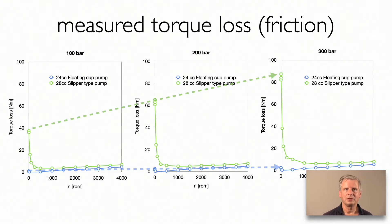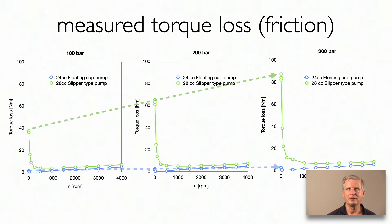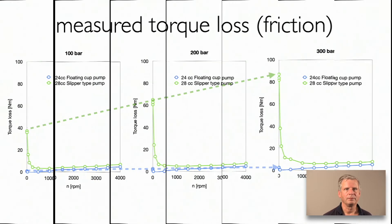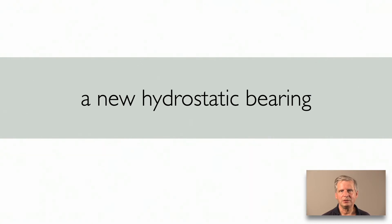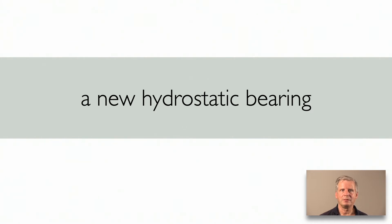Part of this effect is due to the floating cap principle itself, which eliminates the friction losses and friction forces between the pistons and the cylinders. But another important reason can be found in the new design of the sealing lands of the barrel, which is the topic of this presentation. It is about a new hydrostatic bearing designed for hydrostatic machines — a bearing which functions even when the rotational speed is very low or close to zero, and which also stabilizes the barrel position at high operating speeds, avoiding the risk of barrel tipping and malfunction of the pump.